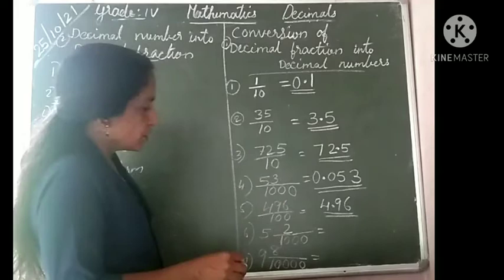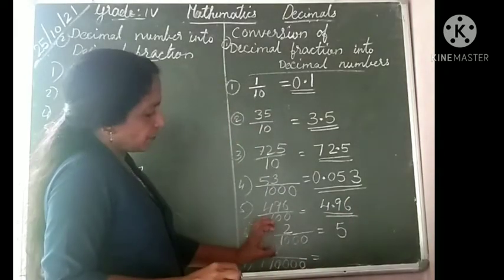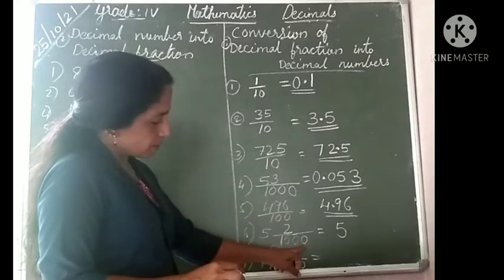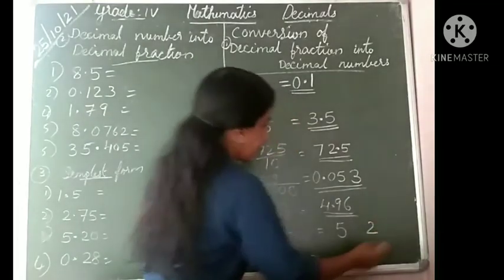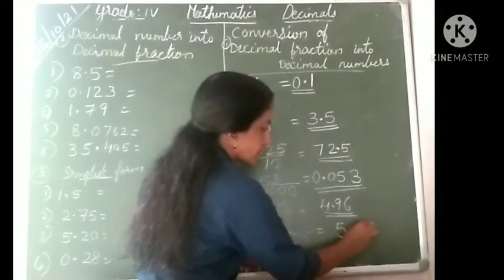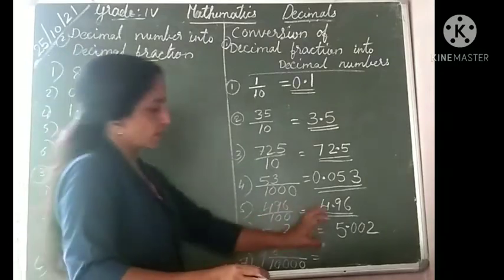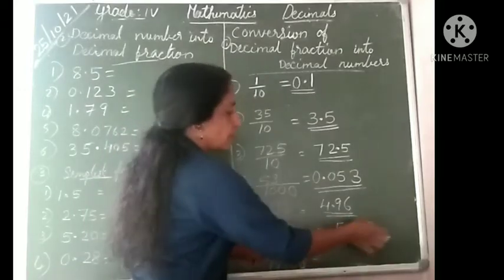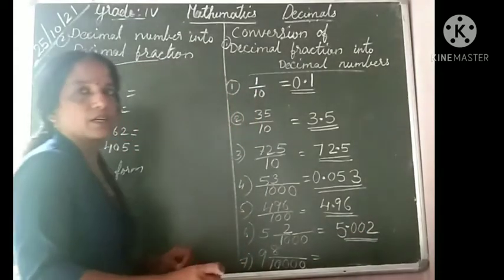Next: 5 and 2 by 1000. This is a mixed fraction. The whole part is 5. For the fractional part, 2 by 1000 — the denominator 1000 has three zeros, but we have only one digit 2. So we need 2 more zeros to the left of 2, giving 002. Put the decimal point before 3 digits. The whole part is 5, so the answer is 5.002.